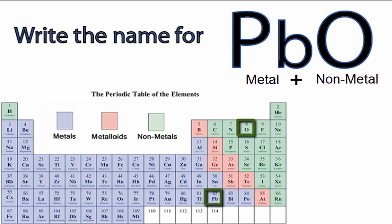If we have a metal and a nonmetal, we have an ionic compound, and that means we're going to have to think about the ionic charges as we write the name for PbO.